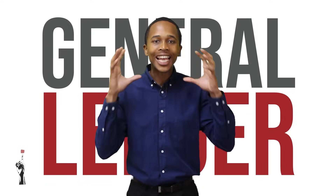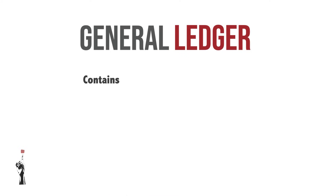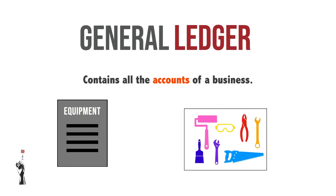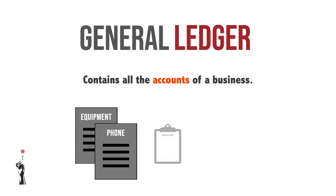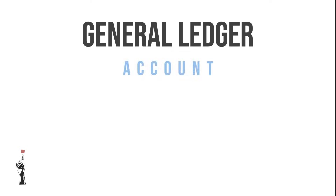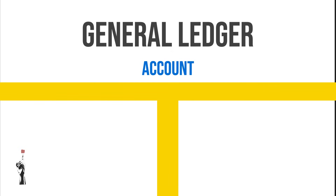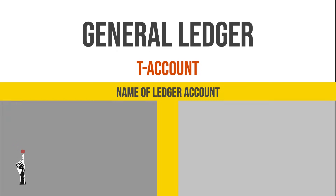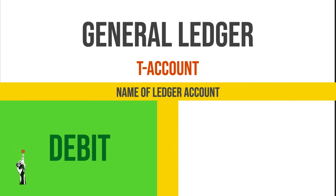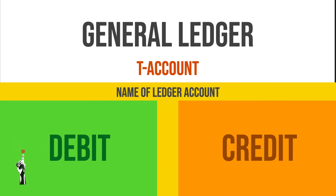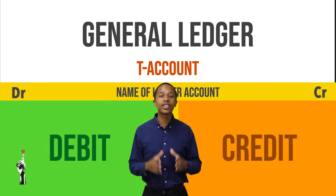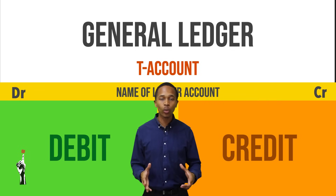Now that we've gone through some accounting concepts and looked at different types of businesses, we're going to look at something very key in business — the general ledger. The general ledger contains all the accounts of a business. An account is where all transactions of a similar nature are recorded. An account in a general ledger looks like a capital T and is called a T-account. The accounts in the ledger have two sides: the left-hand side is called the debit and the right-hand side is called credit.